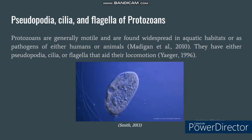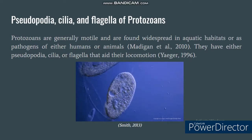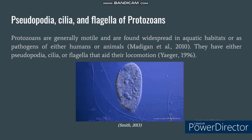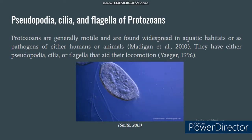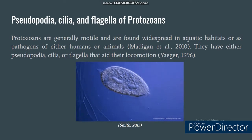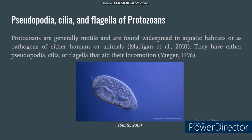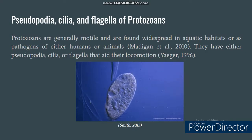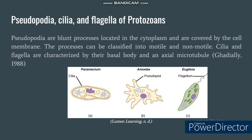For their locomotion, protozoans are generally motile and are found widespread in aquatic habitats or even as pathogens of humans or animals. They have either pseudopodia or flagella which help them with their movement. Pseudopodia are blunt processes found in the cytoplasm and are covered by the cell membrane. These blunt processes are classified into two: motile and non-motile. On the other hand, cilia and flagella are characterized by the presence of their basal body and an axial microtubule.